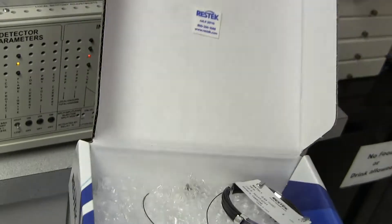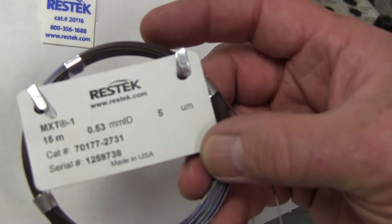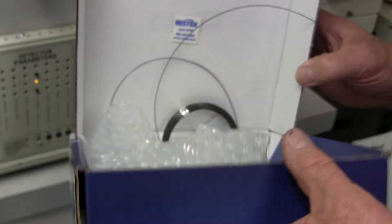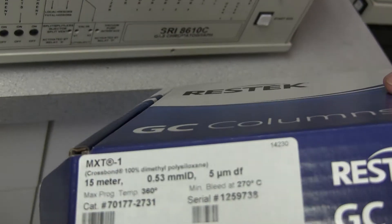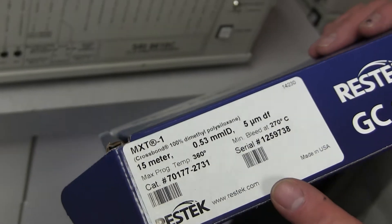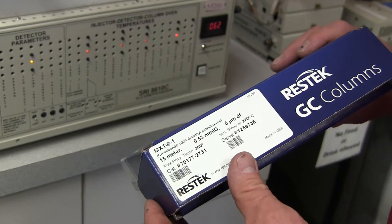Unfortunately, they don't always put the maximum temperatures on the tag on the column. There's no mention of the maximum temperature on the tag. So you have to really note it when you open the box. The box has the maximum temperature, but the column itself doesn't say. You can always go to Restek's website and look it up and that's what you should do if you're not sure what the maximum safe temperature of the column is.